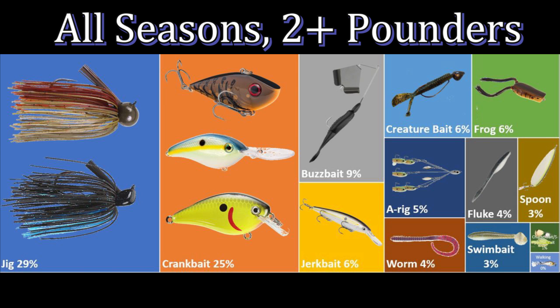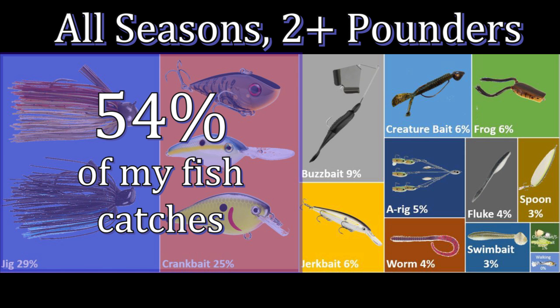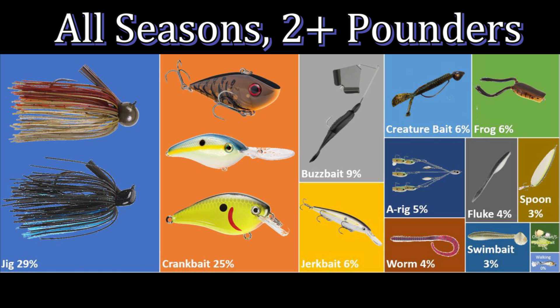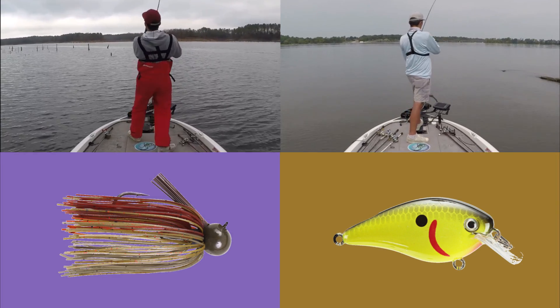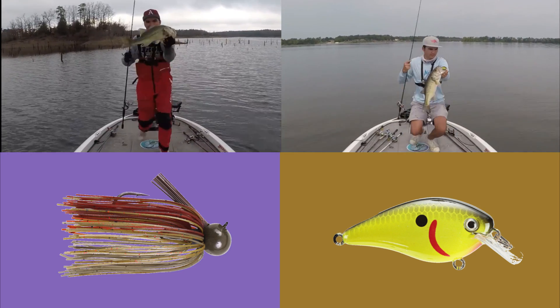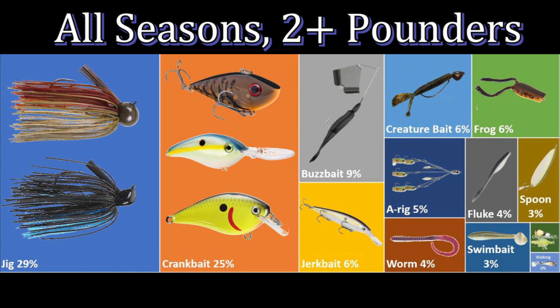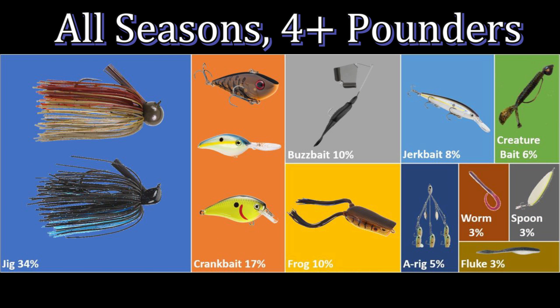This first graph is the most broad cut of the data — it shows every bass over two pounds I caught across every single season. Over 50% of my bass were caught on either a jig or crankbait, regardless of time of year or size. When I was fishing tournaments my friends always made fun of me for only fishing a jig and crankbait. My four main staples are the jig, crankbait, buzzbait, and jerkbait.